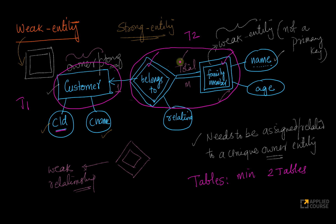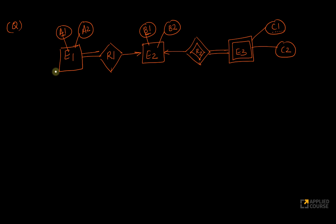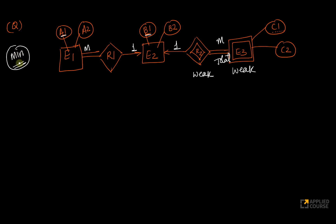Let's solve a very interesting problem. Imagine I have a diagram with a weak entity and a weak relationship in a one-to-many total participation setup, and also another one-to-many relationship with a strong entity where A1 is the primary key, B1 is the primary key, and C1 is a key of the weak entity. The question is: what is the minimum number of tables needed? Four tables is obviously doable — one table for each entity and relationship.